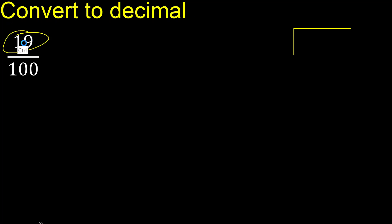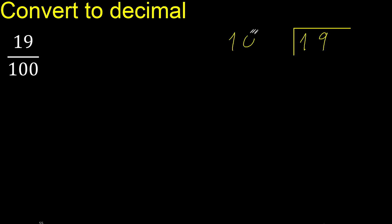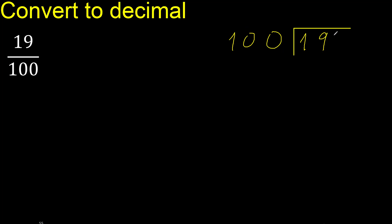19 divided by 100. 19 is less than 100, therefore complete — always complete with 0. Here: 0 point.